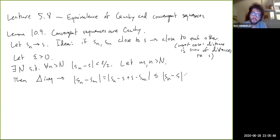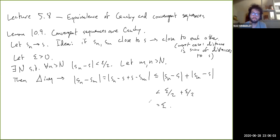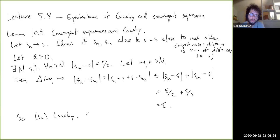|S_N − S| + |S_M − S|, which is less than or equal to epsilon over two plus epsilon over two, which equals epsilon — and that last step is strict. So we showed that for this value of capital N, any two terms in the sequence after that value of capital N have to be within epsilon of each other, so S_N is Cauchy.